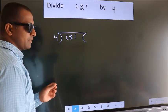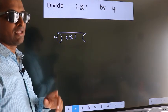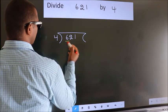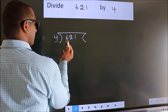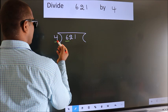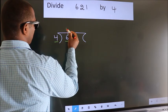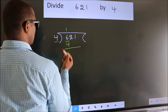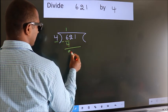This is your step 1. Next, here we have 6, here 4. A number close to 6 in 4 table is 4 once 4. Now we should subtract. We get 2.